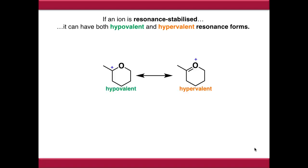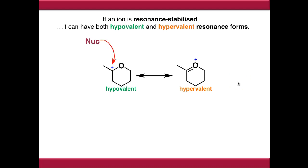Where this becomes important is how you deal with it in terms of reactivity. If we've got hypovalent and hypervalent resonance forms of the same ion, this dictates what sort of curly arrows you're going to have to use. If we treat this molecule with a nucleophile, the hypovalent ion allows us to directly recombine - we can push electrons directly onto this carbon atom because it's hypovalent. It wants to make another bond and it's got an empty P orbital, so it's ready to accept electrons.